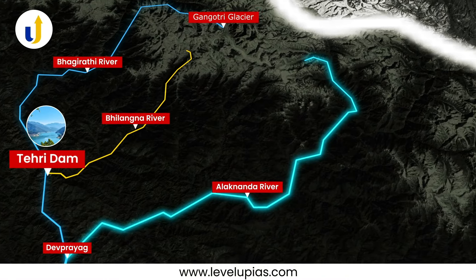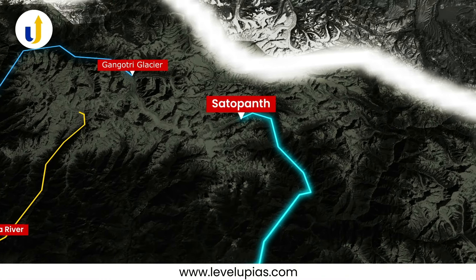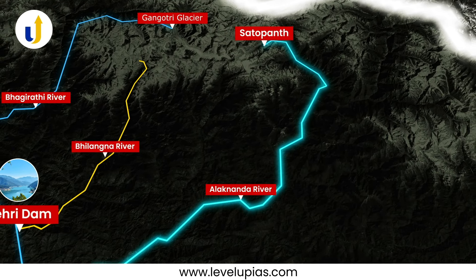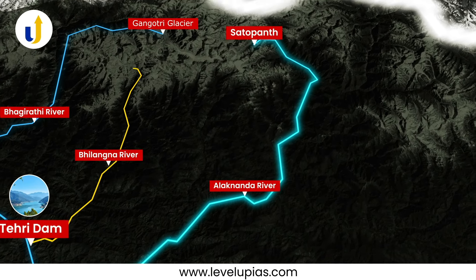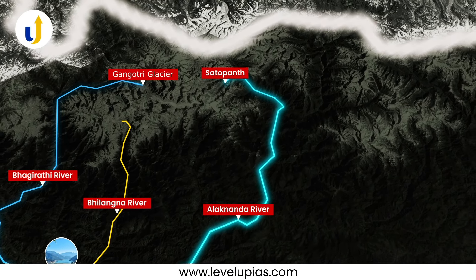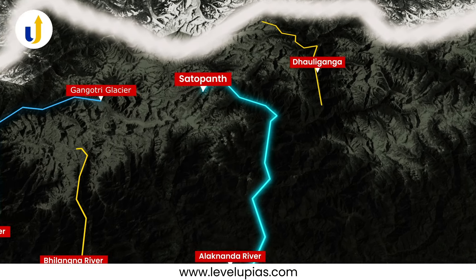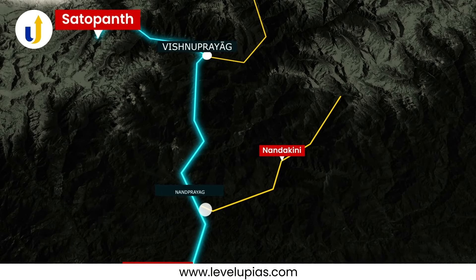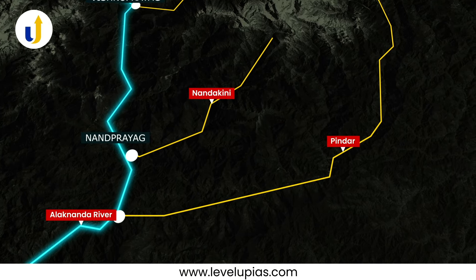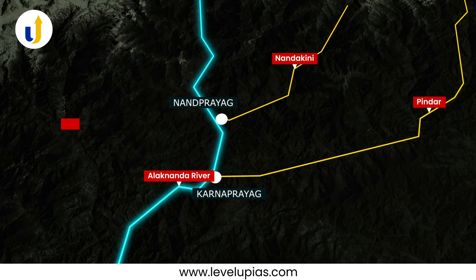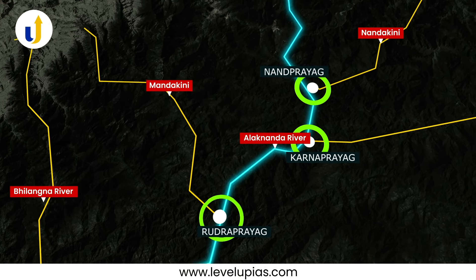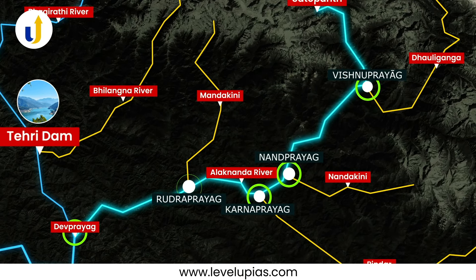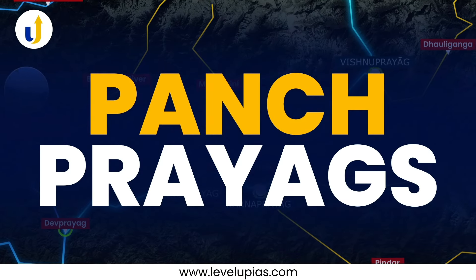Alaknanda originates from the foothills of Satopanth Bhagirath-Kharak glacier in the Himalayas. En route, the Alaknanda is joined by four streams: the Dhauliganga river at Vishnuprayag, the Nandakini river at Nandaprayag, the Pindar river at Karnaprayag and the Mandakini at Rudraprayag. All these confluences along with Dev Prayag are collectively known as Panchaprayags.